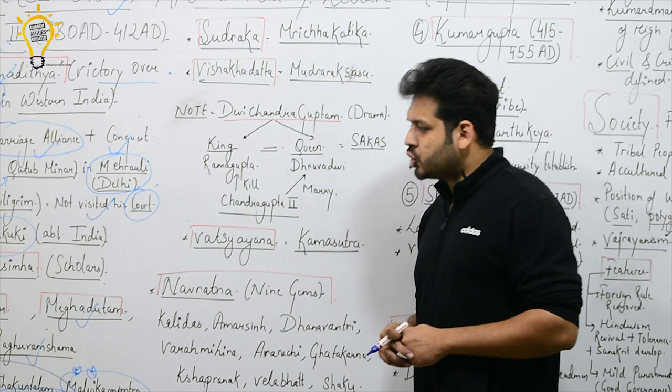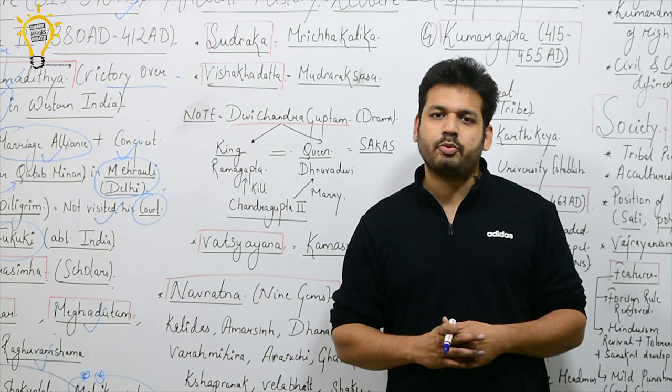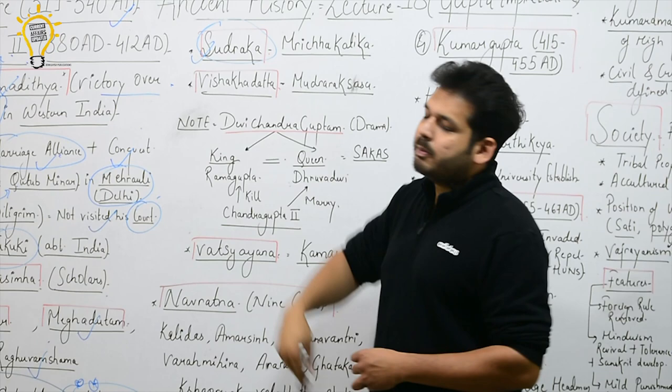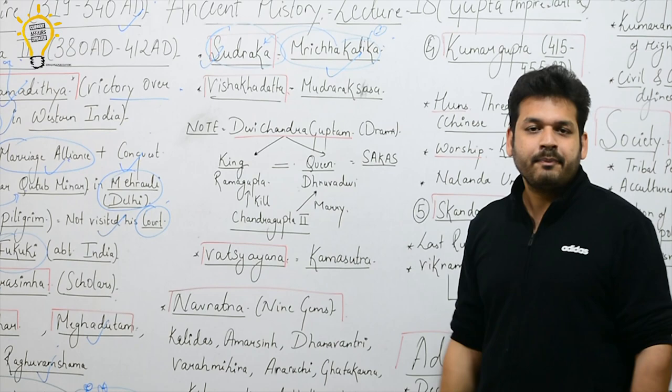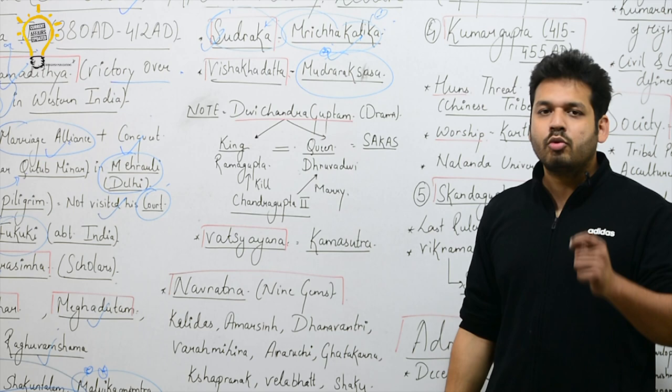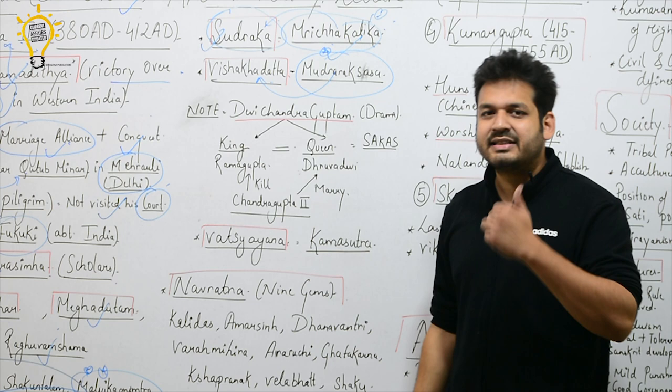Some other important scholars of Chandragupta II's time also made significant contributions. One was Shudraka, who wrote the famous book Mricchakatika — a direct exam question: who wrote Mricchakatika? The answer is Shudraka. Another important work is Mudrarakshasa, which has also been discussed previously, written by Vishakhadatta.